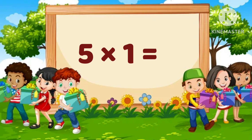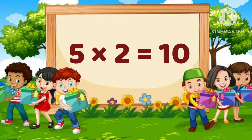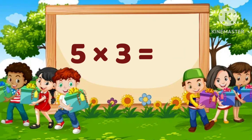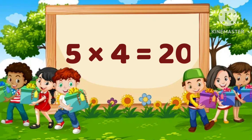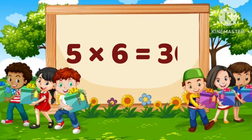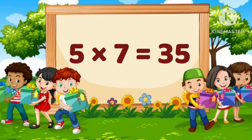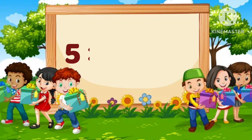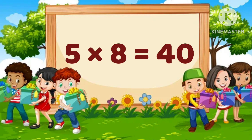5 ones are 5. 5 twos are 10. 5 threes are 15. 5 fours are 20. 5 fives are 25. 5 sixes are 30. 5 sevens are 35. 5 eights are 40.